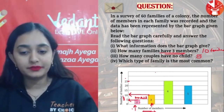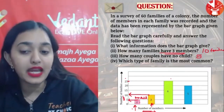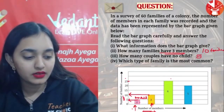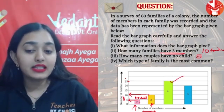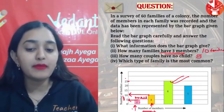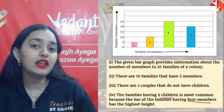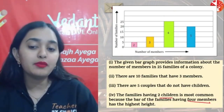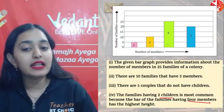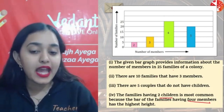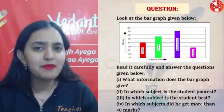Which type of family is most common? Look at the tallest bar — it is the bar for 4 members. So the family with 4 members — that is 2 children — is the most common. Summary: bar graph shows members in 25 families; 10 families have 3 members; 5 couples have no child; families with 2 children and 4 members are most common.